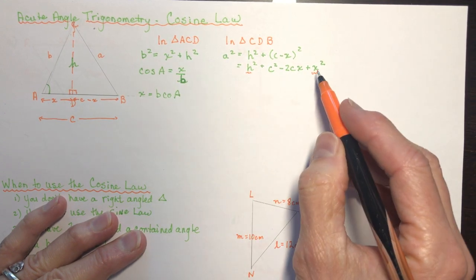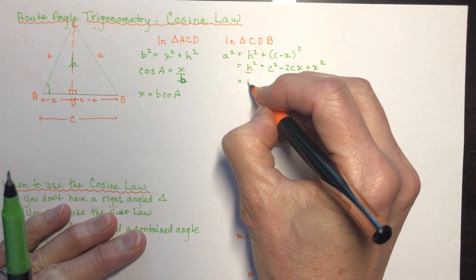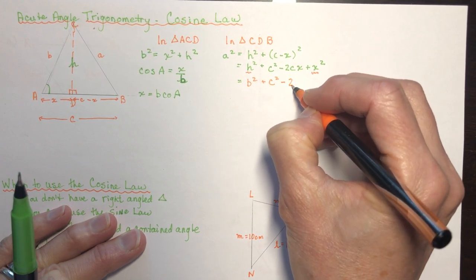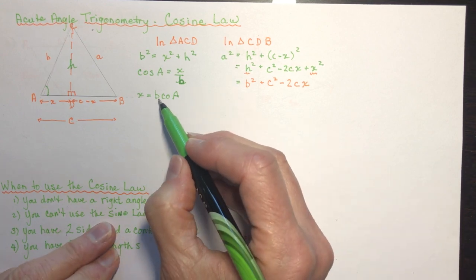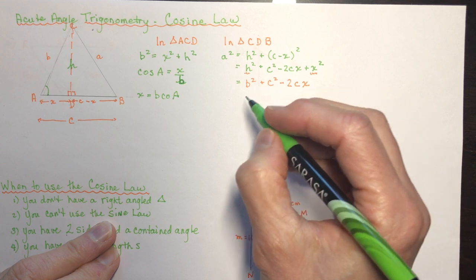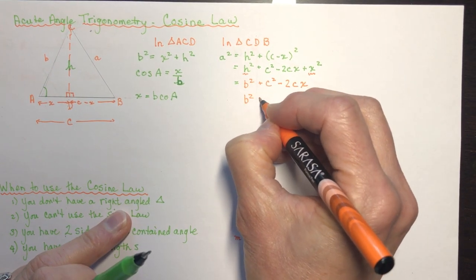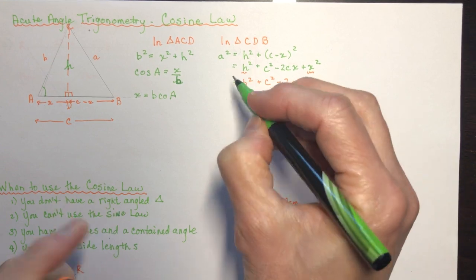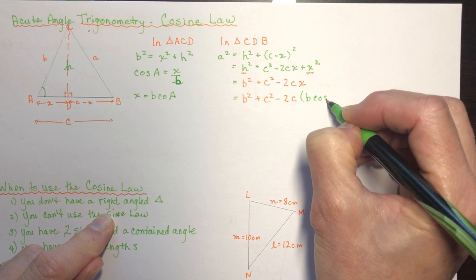Replacing h squared plus x squared with b squared gives us: a squared equals b squared plus c squared minus 2cx. Now we do a second substitution: x equals b times cosine of A, so we replace x with b·cosA, giving us a squared equals b squared plus c squared minus 2c times b·cosA.